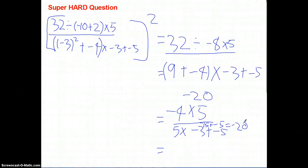So, this ends up becoming negative 20 over negative 20. And, what is negative 20 over negative 20? That equals 1. Now, square it. What is 1 squared? 1.